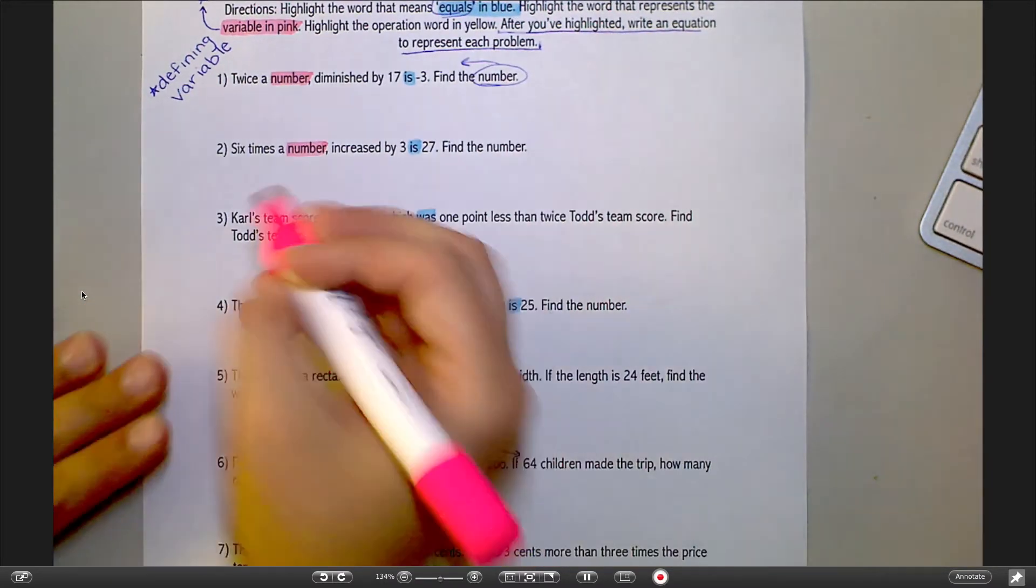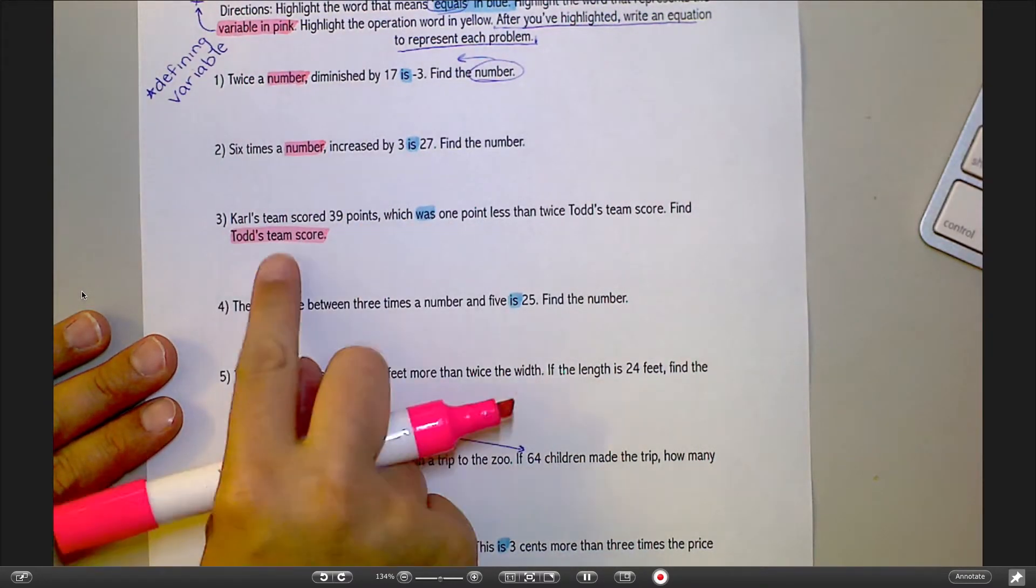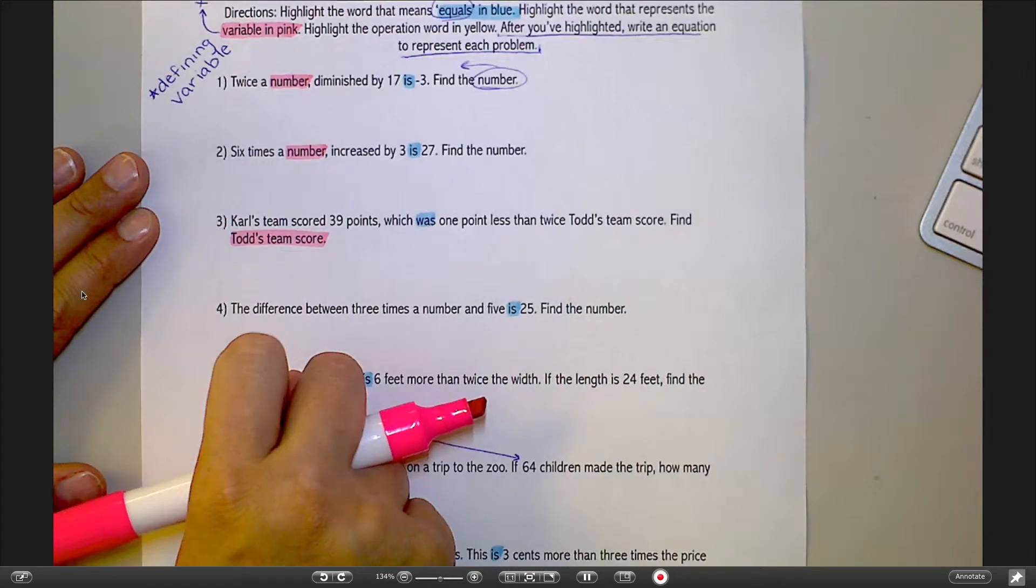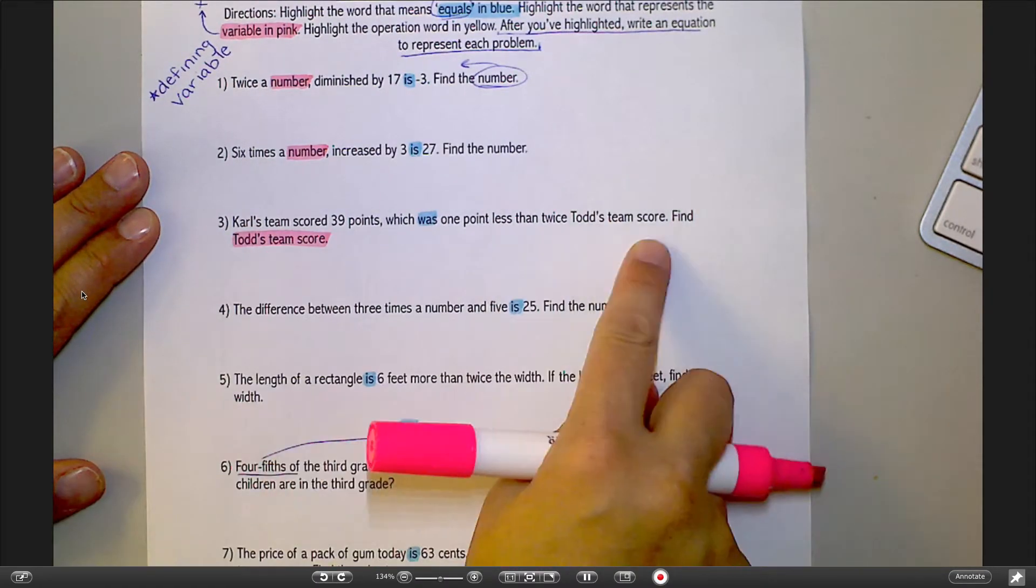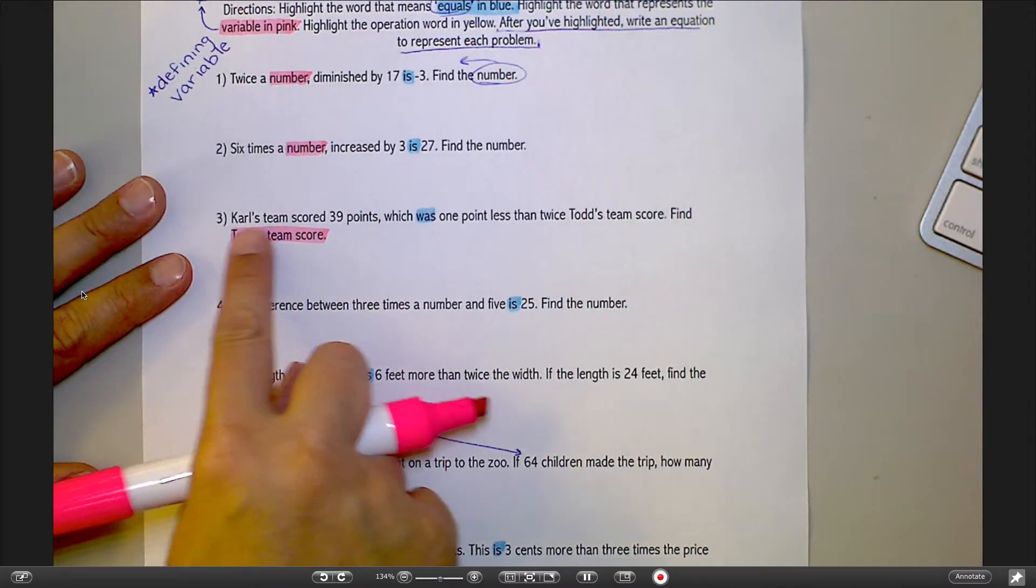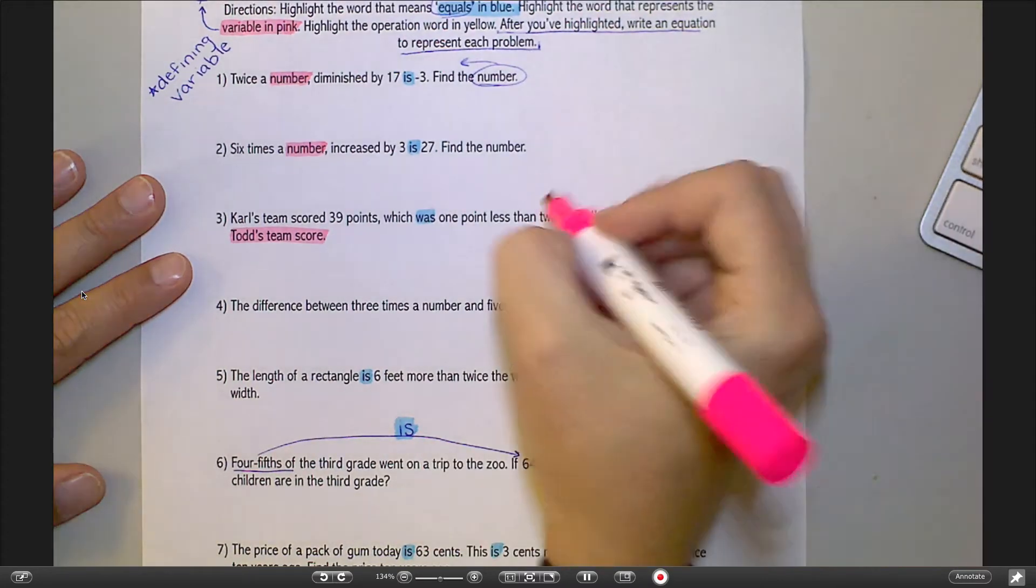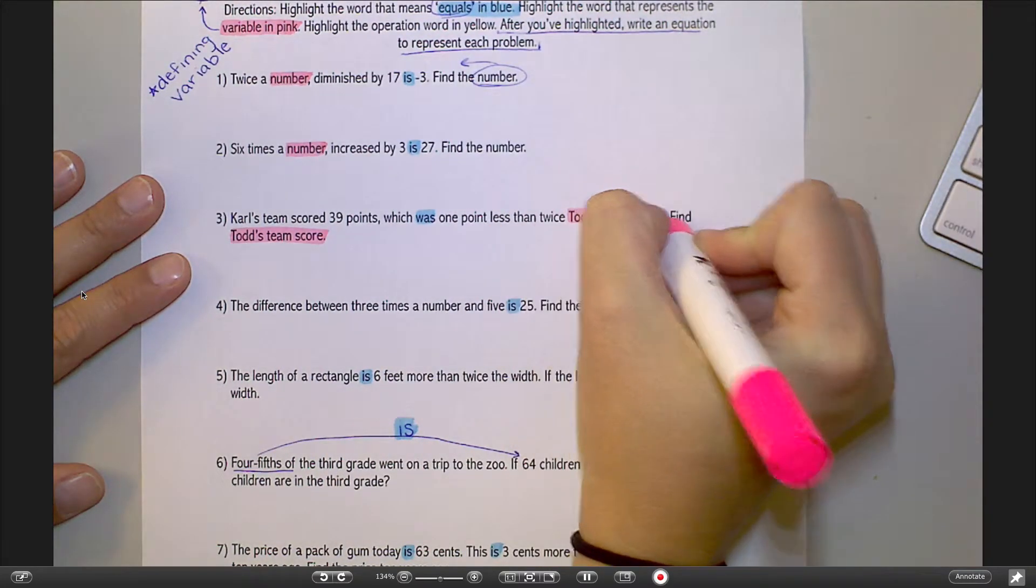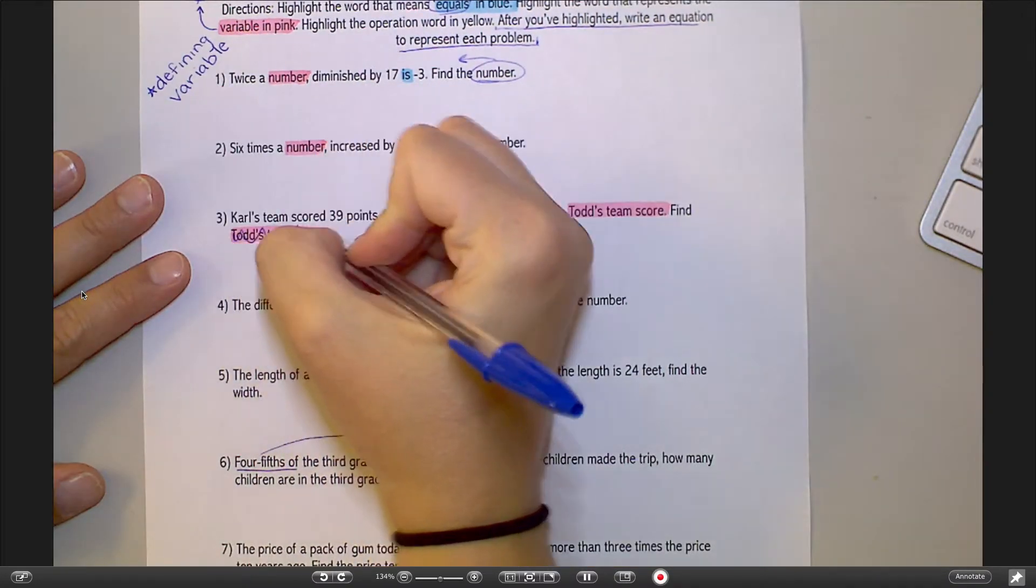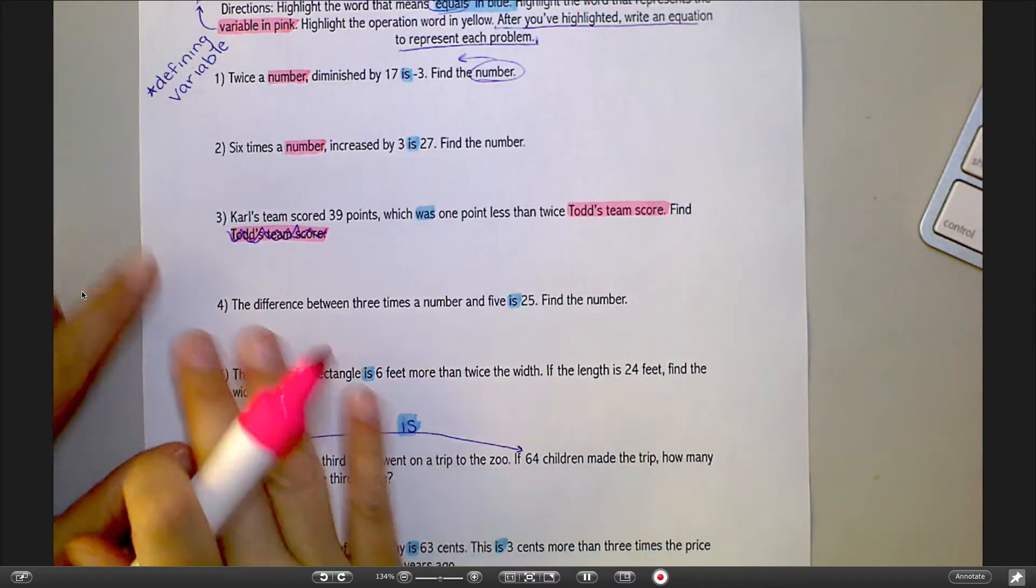I'm trying to find Todd's team score. Now be careful that you don't just go, oh, I'm trying to find the team score, because you've got two different team scores in here. You've got Carl's team and you've got Todd's team. It's Todd's team score that you're trying to find. And so then if I read through this sentence, I find Todd's team score right there. That's where I'm going to highlight in pink. I shouldn't have highlighted it back here. Whoops. I was talking and got away with myself.